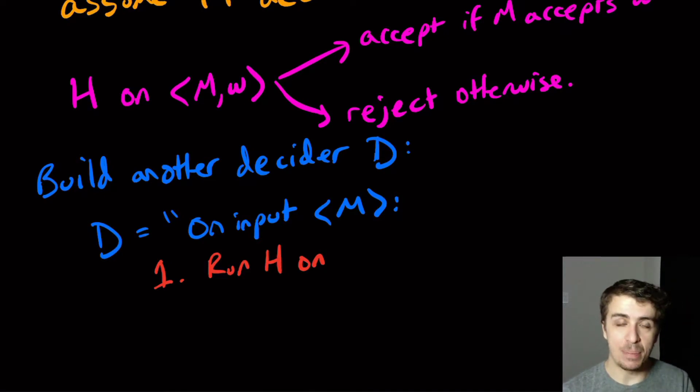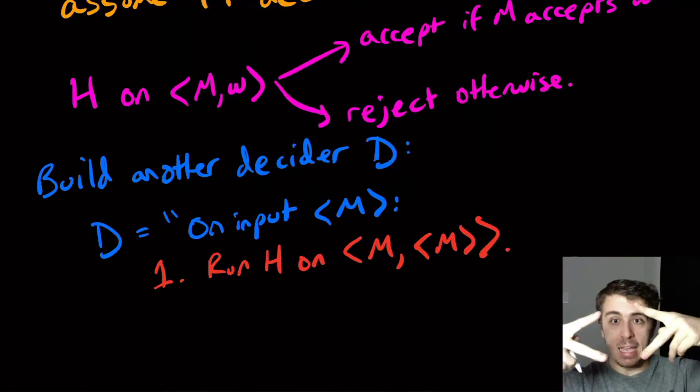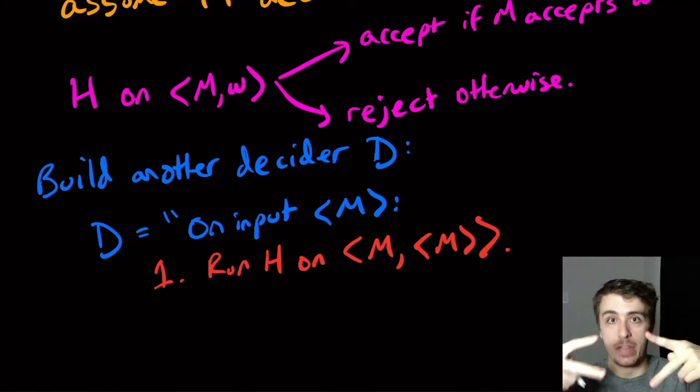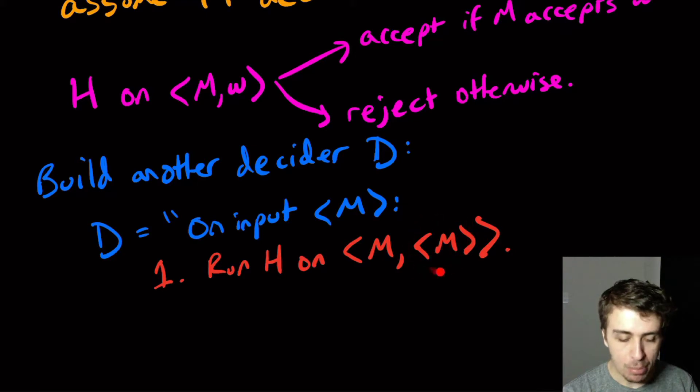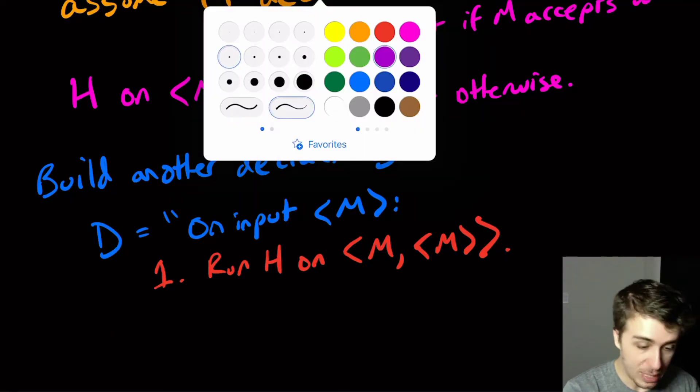So we need a string as the input for the second parameter for H. So I can feed M into the decider H here, but I need the input string. But one string that we can use is the actual string representing the machine itself. So remember that the angle brackets mean the string encoding of the thing. So here we're just feeding the string representing the machine into the machine itself, which is totally okay. You could have a program send its own code as its input to itself. You can do that. And we're doing the exact same thing here. I'm not claiming that this machine has any purpose other than to derive a contradiction, which is what it really is used for here.